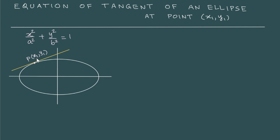The coordinates of this point are x1, y1. The first thing we should do is take another point on the ellipse. Let us say Q with coordinates x2, y2, and then we should try and get the equation of a line passing through these two points P and Q, which is nothing but the secant line.